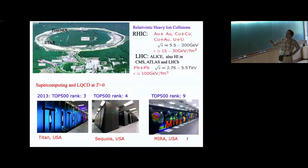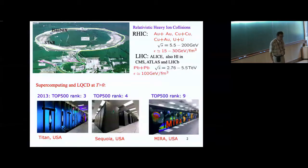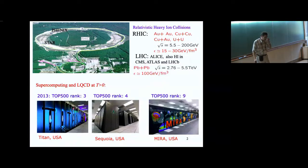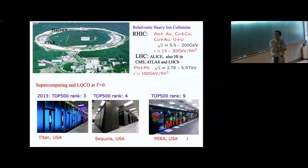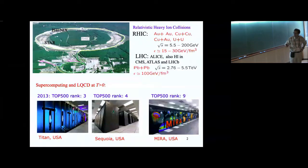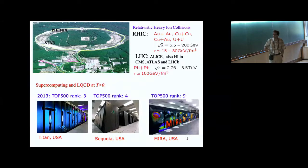Here I show the two main experiments I will mostly discuss. RHIC collides gold ions up to 200 mass GeV, and the energy density produced is pretty high — between 15 to 30 GeV per fermi cubed, depending on when we assume the system thermalizes. At LHC we have three experiments at much higher energy, almost an order of magnitude higher, and the energy density at the very initial stage could reach 100 GeV per fermi cubed.